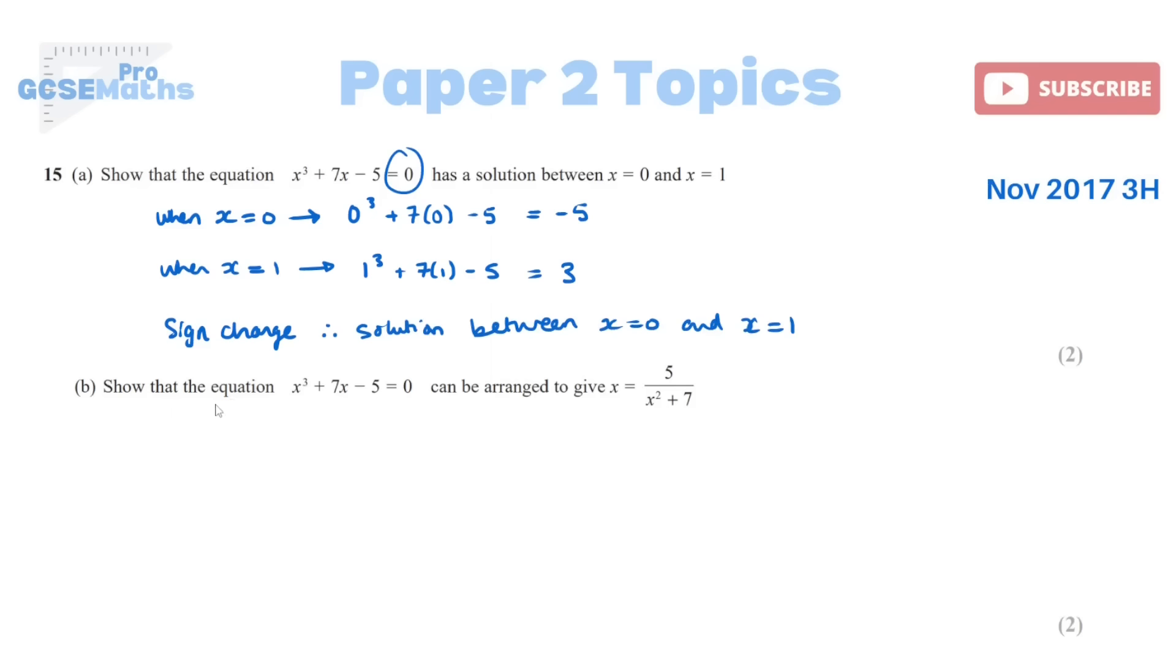Part B is show that the equation x cubed plus 7x minus 5 equals 0 can be arranged to give x is equal to 5 over x squared plus 7. They just want you to look at both and see if you can figure out the steps. So I can see the first thing is they've obviously moved the 5 across by adding it. They've obviously left an x behind, so I think they've factorised it out, factorised out an x, and left themselves with a bracket of x squared plus 7. So then you can see they've obviously just divided by that bracket, and there you are.